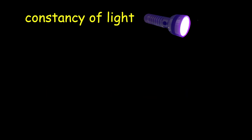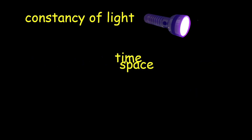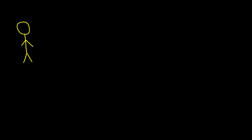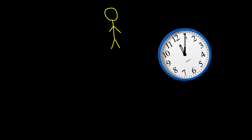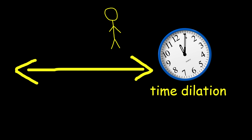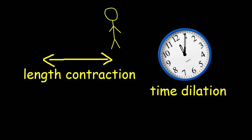To simplify: imagine you are in a car moving at a high speed. According to special relativity, if you shine a flashlight inside the car, the light's speed will be the same whether the car is moving or not. This constancy of light speed leads to the idea that time and space must adjust to maintain this constant speed. As you move faster, time for you slows down — time dilation — and distances in the direction of motion shorten — length contraction.